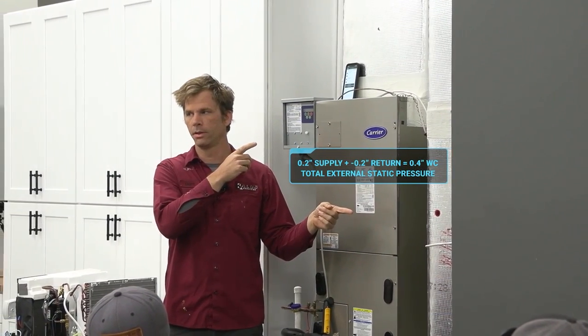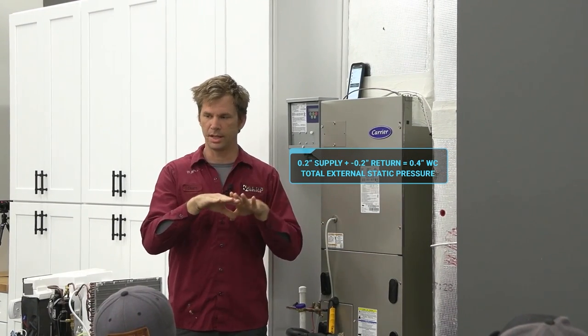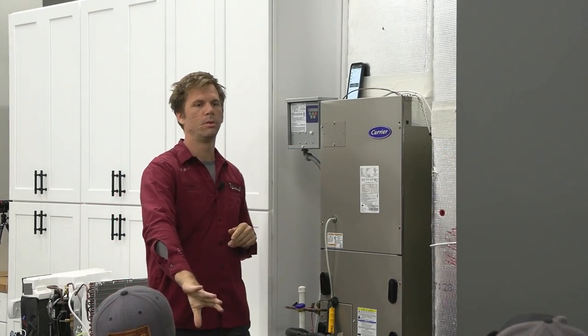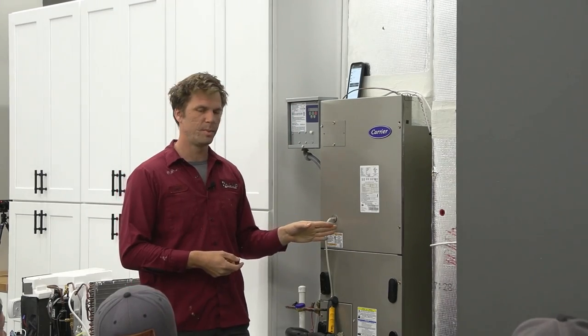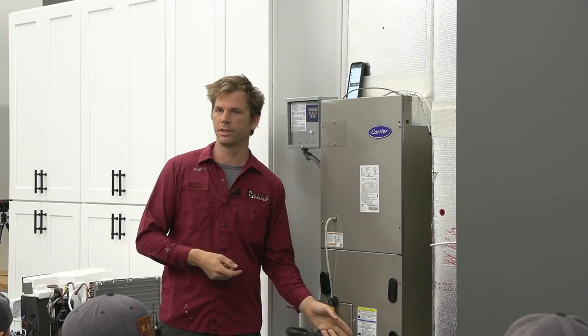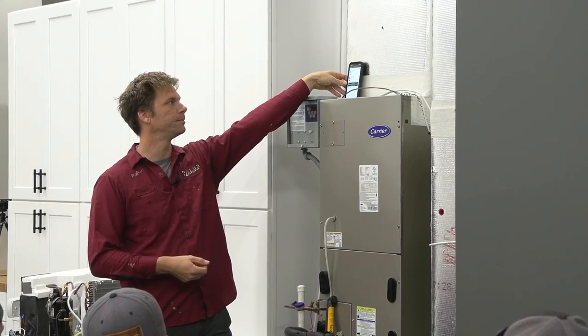We add them together. We have 0.4 as our total. We have 0.2 resisting on the bottom side, 0.2 resisting on the top. It's a little bit different here. If you look at your MeasureQuick, these are both negative pressures, and so the total external is going to be a little bit off. You just have to do the math yourself.